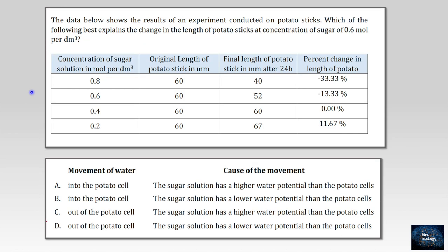In this question, we will analyze certain data. The data below shows the results of an experiment conducted on potato sticks. Which of the following best explains the change in the length of potato sticks at concentration of sugar of 0.6 mol per decimeter cube. So we are talking about this concentration. I'll explain it in details with certain figures. But I want to highlight something. The original length for all potato sticks are the same. And here the length changes. I want you just to focus with the high concentration and with the lowest. The highest, the shortest. The lowest, here the longest.